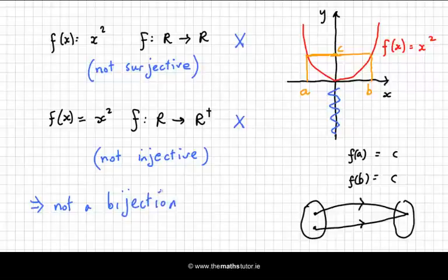So my original function, f of x equal to x squared, isn't invertible for two reasons: it's not surjective and it's not injective. And even if we restrict the co-domain to R plus, it's still not injective, so it's not a bijection.